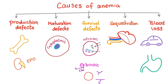Number three: survival defects. The RBC is produced normally but cannot survive. This can be due to intrinsic or extrinsic defects. Intrinsic defects can be in the membrane — such as spherocytosis or elliptocytosis — in an enzyme, such as G6PD deficiency, or in the hemoglobin itself, such as sickle cell disease.